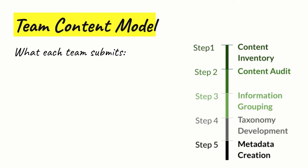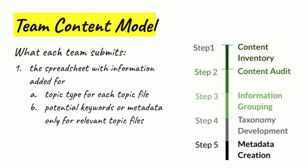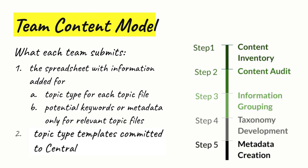Here's what your team is going to submit for the team content model assignment. The first deliverable is the spreadsheet from the content inventory, to which you will have added two types of information: first, the topic type for every topic file in Flare, and second, potential keywords or metadata only for the topic files you're going to continue working with for the rest of the project — the content for chapter one in both guides and the appendix on product support. The second deliverable is your topic type templates, which you'll commit to Central — you'll have at least three, one for each base DITA type. There's no single correct model; I've allocated four hours for each team member. Just do the best you can with the time you have.